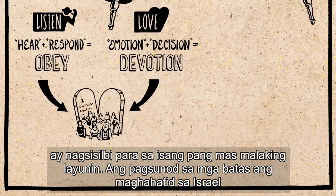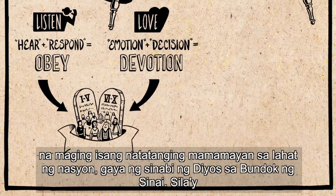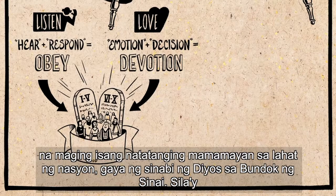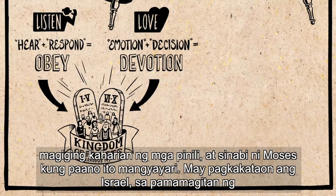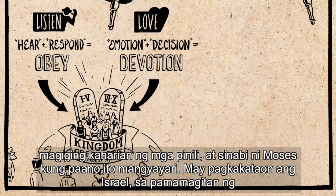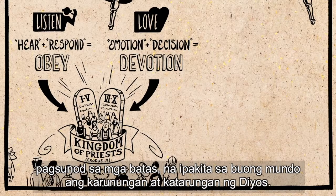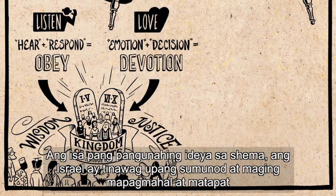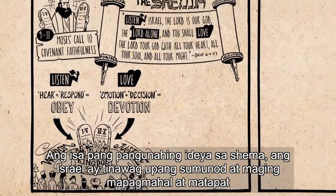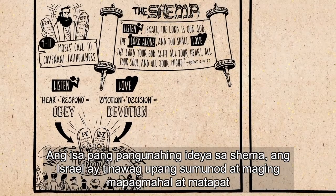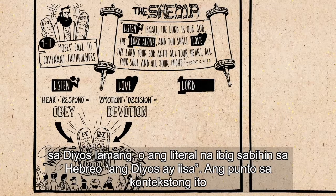For Israel, their obedience and devotion to God served a much larger purpose. Obedience to the laws is going to make Israel a unique people among the nations. Just like God said at Mount Sinai, they will become a kingdom of priests. And Moses says: Israel has the chance, by following the laws, to show the whole world the wisdom and the justice of God. The other key idea in the Shema is that Israel was called to obey and be devoted to the Lord alone — or literally in Hebrew, 'The Lord is one.'